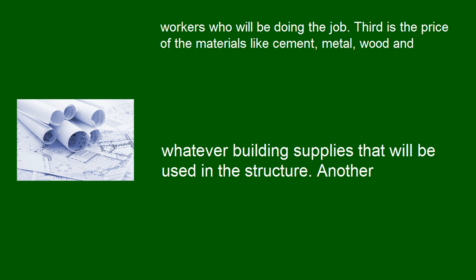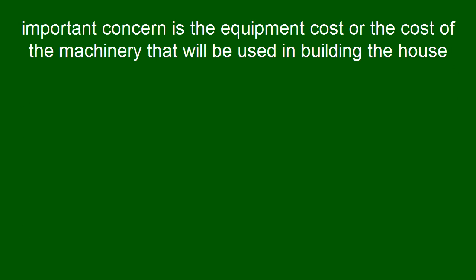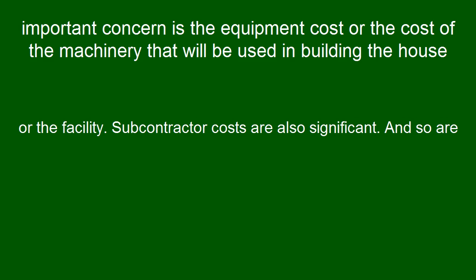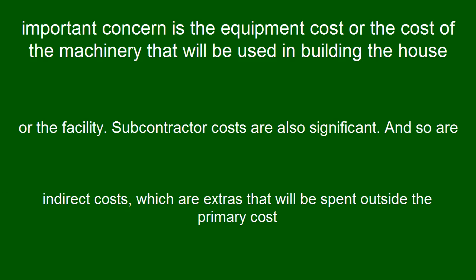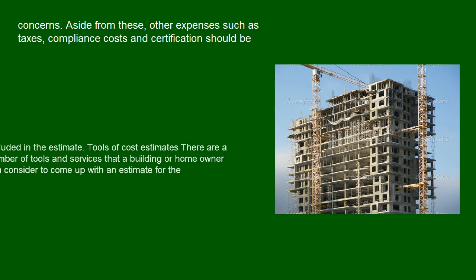Another important concern is the equipment cost, or the cost of the machinery that will be used in building the house or the facility. Subcontractor costs are also significant, and so are indirect costs, which are extras that will be spent outside the primary cost concerns. Aside from these, other expenses such as taxes, compliance costs, and certification should be included in the estimate.